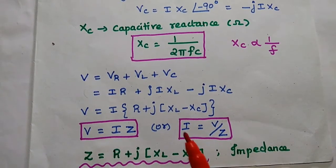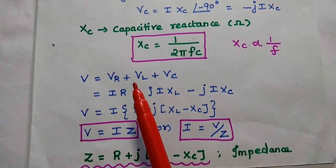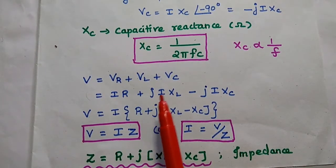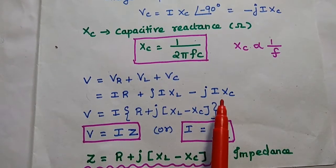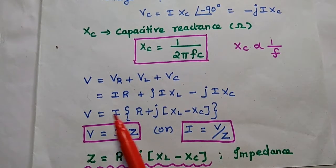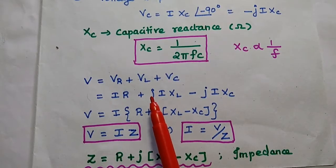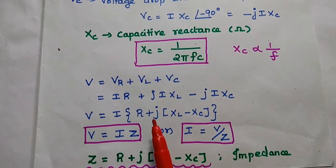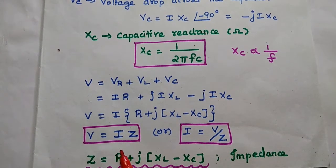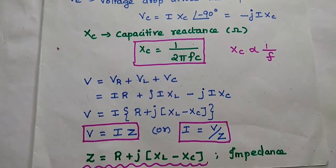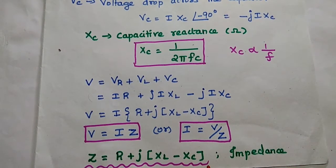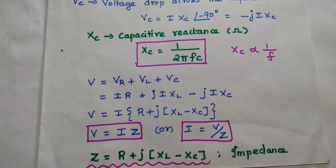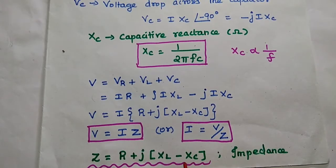Next, we find the total supply voltage. V equals the sum of the voltage drops: Vr = I·R, Vl = +J·I·XL, and Vc = −J·I·Xc. Since I is common, we can factor it out to write V = I·Z, where Z = R + J(XL − Xc). This Z is called impedance — the combination of resistance and reactance. Resistance is a pure real value; reactance is an imaginary value.